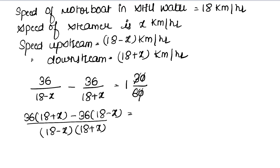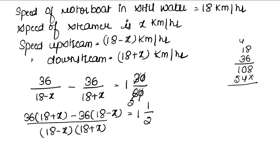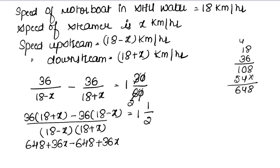Expanding the numerator: 36 into (18 plus x) minus 36 into (18 minus x). The 648 terms cancel out, leaving 72x in the numerator. The denominator uses the identity (a plus b)(a minus b) = a² minus b², giving 18² minus x².